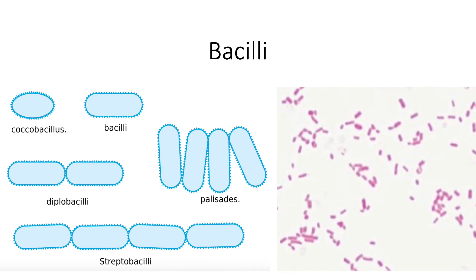The next major grouping is your bacilli. These are rod-shaped bacteria that have rounded ends. The most common ones seen are your coccobacillus, which is a bacilli that is shorter and more rounded. Then of course your regular bacilli. Your diplobacilli, which is simply bacilli in pairs. And then your streptobacilli, which is bacilli in chains. Then you have your palisades, which is an arrangement of bacilli wherein they are standing next to one another, sort of like a picket fence.